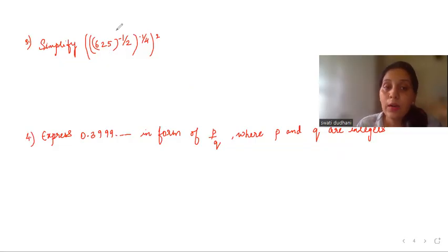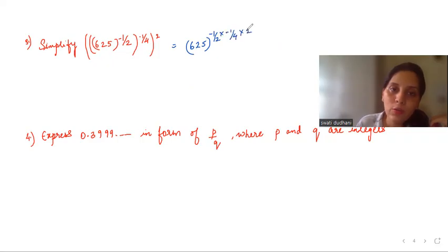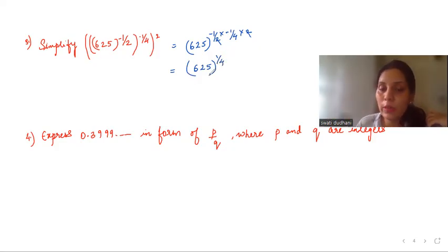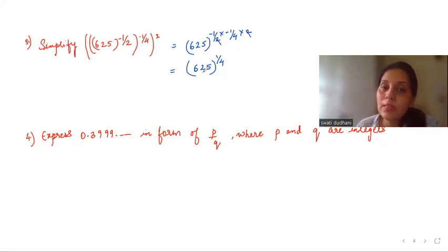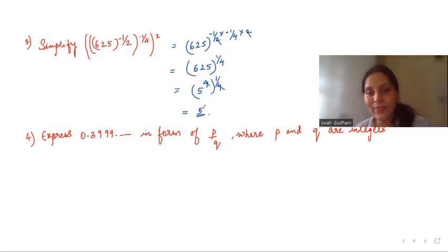Next, simplify: 625^(-1/2 × -1/4 × 2). When you have multiple powers, multiply them all: (-1/2) × (-1/4) × 2. The 2s cancel, and minus × minus = plus, giving 625^(1/4). The denominator of the power is 4, so write 625 = 5⁴. Then (5⁴)^(1/4) — the 4s cancel — and the answer is 5.